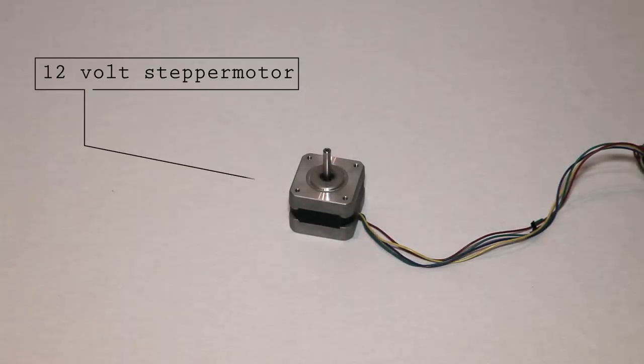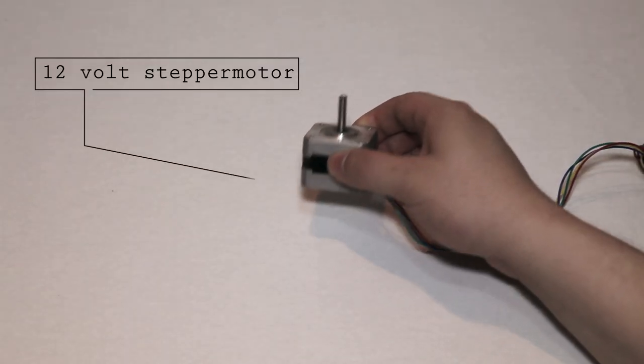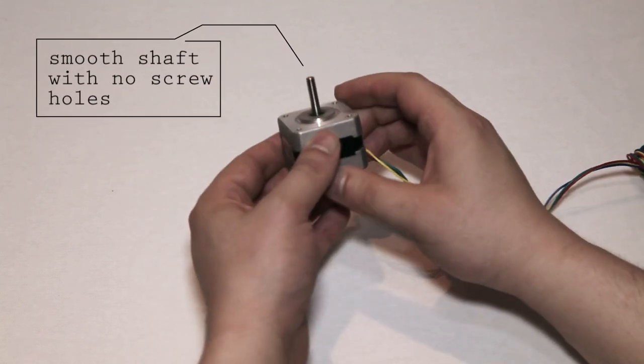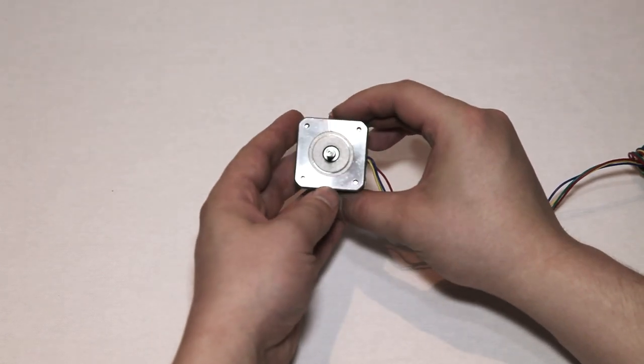Stepper motors are great, but many of them come with a smooth solid shaft that makes attaching the motor to other things a bit difficult, at least without a welder. In this video we show you one quick solution for attaching parts to the motor.